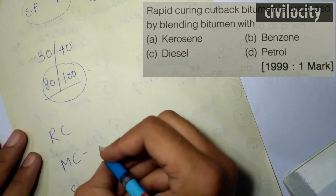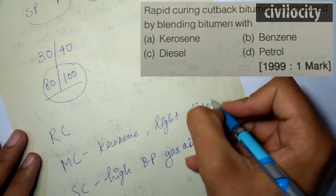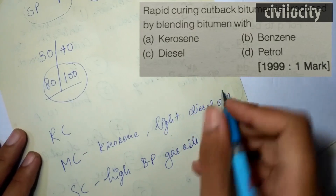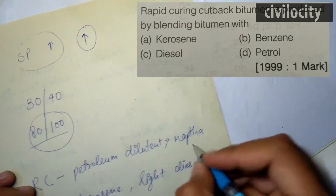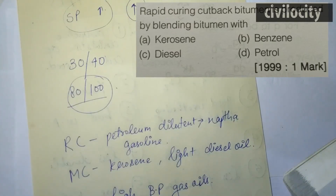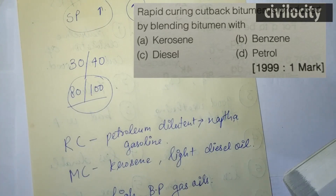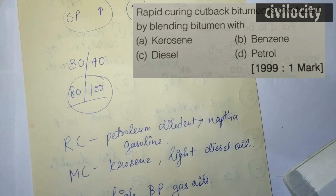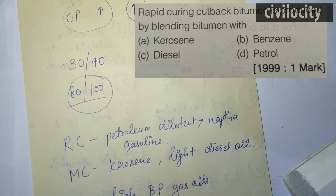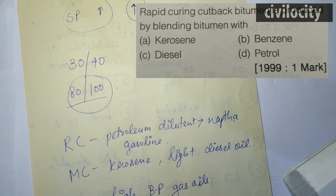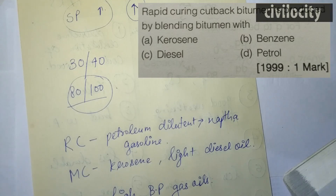Rapid curing cutback bitumen is fluxed with petroleum dilutants like naphtha or gasoline — these light solvents evaporate faster. Looking at the four options — kerosene, benzene, diesel, and petrol — we know diesel and kerosene are used for medium curing. Since rapid curing requires petroleum dilutants like naphtha or gasoline, the answer is D: petrol.